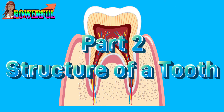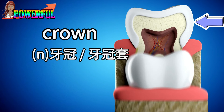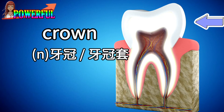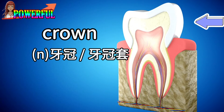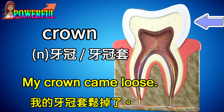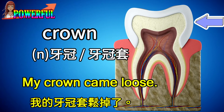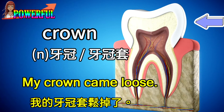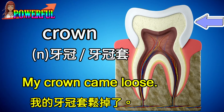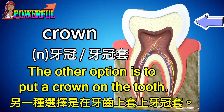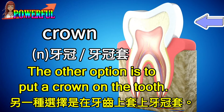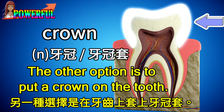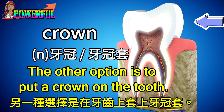Part 2: Structure of a Tooth. Crown. My crown came loose. The other option is to put a crown on the tooth.